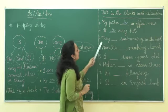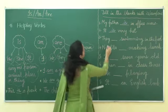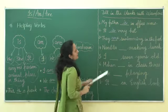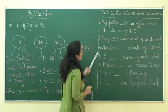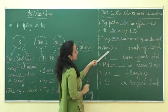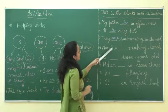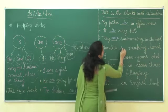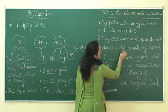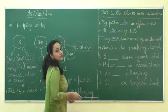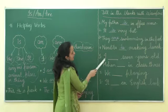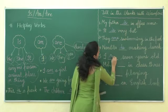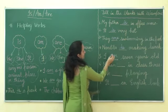Next: 'They ___ swimming in the pool.' 'They' is a plural pronoun, so we can use 'are'. They are swimming in the pool. Next: 'Nandita ___ making lunch.' Nandita is a name of a girl, so it is a singular noun. Nandita is making lunch.